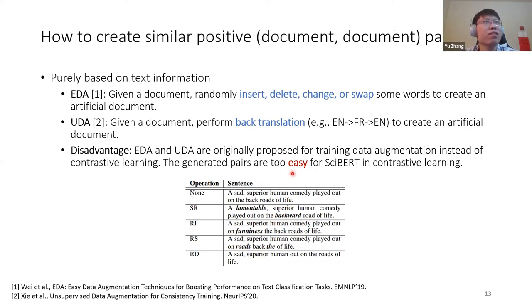So the last question, how to create similar positive document-to-document pairs? That becomes the key of our contrastive learning framework. Let me first introduce some previous studies. They're purely based on text information. I list two things here, EDA and UDA. Both are seminal studies. For EDA, it randomly inserts, deletes, changes, or swaps some words to create an artificial document. For UDA, it performs back translation from English to French to English again to create the artificial document. Actually, we try these two methods manipulating the text only. However, they do not achieve satisfying performance. Actually, they are not guaranteed to outperform unfine-tuned SciBERT. The reason could be that they were originally proposed for training data augmentation instead of contrastive learning. So the generated pairs are too easy for SciBERT in contrastive learning. You can imagine D and D+ may have 50% or 60% overlapping words. D- is randomly sampled. So it's too easy for SciBERT to distinguish between D+ and D-.